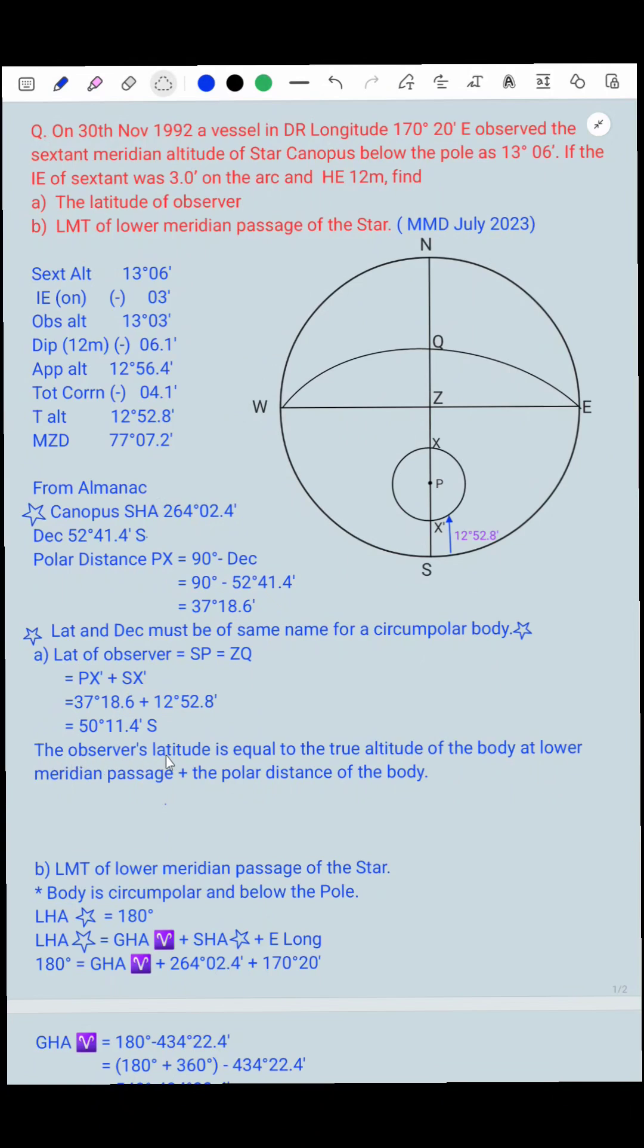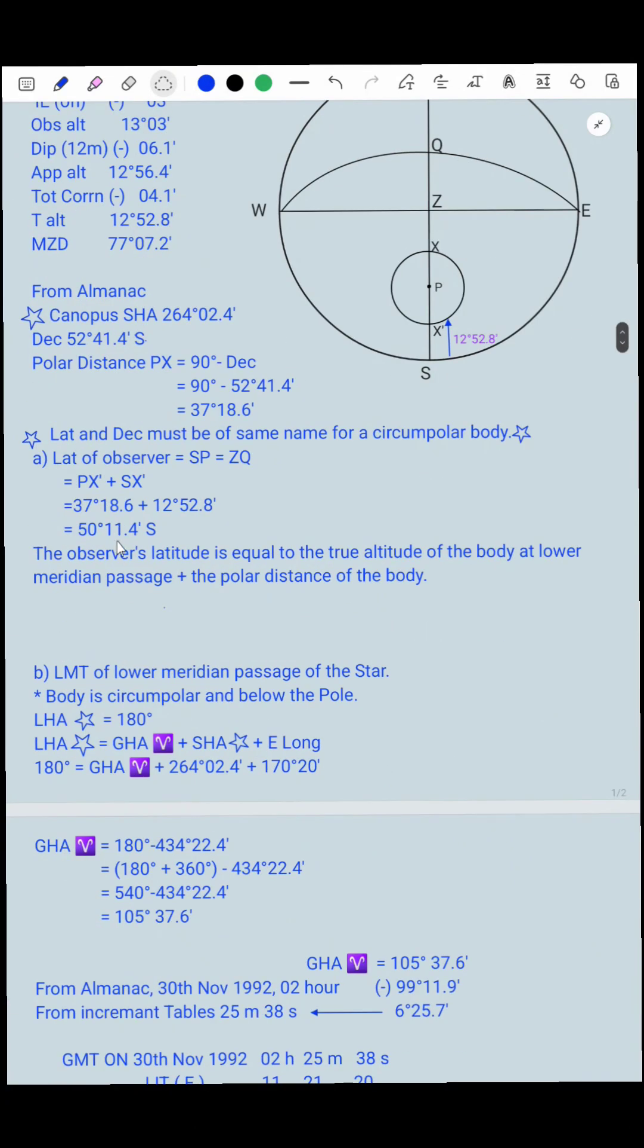Therefore, the observer's latitude is equal to the true altitude of the body at lower meridian passage plus the polar distance of the body. This is the true altitude of the body at lower meridian passage. If the body is here it will be upper meridian passage or above the pole. Body is here, it is lower meridian passage or below the pole. We have found the latitude.